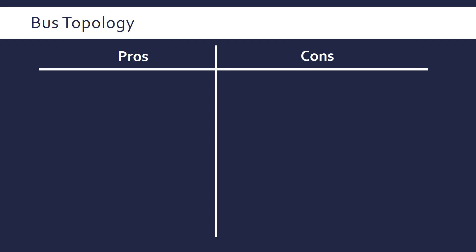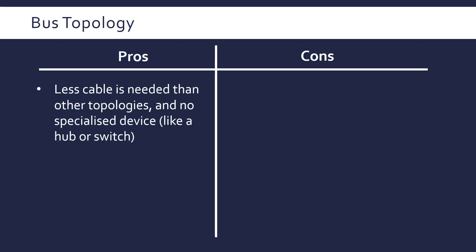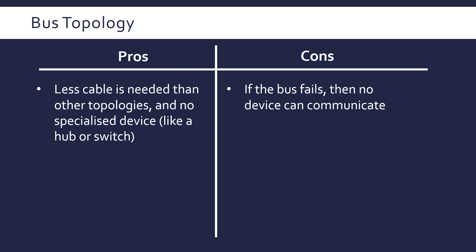Let's evaluate the bus topology. The main pro is that not much cable is needed, and you don't need to have a specialised device like a hub, switch, router, or wireless access point. So it's very simple to operate and cheap to set up comparatively. However, a key issue is that if the bus fails, then no device can communicate — any breakage in the bus is going to cause the whole network to go down, which is obviously quite severe, similar to the central device going down in a star topology.